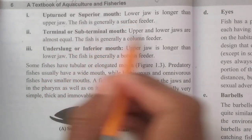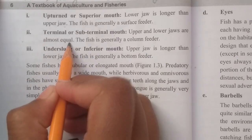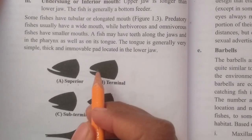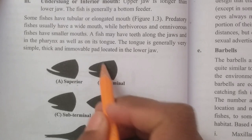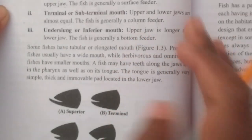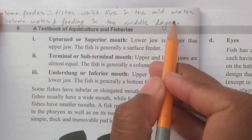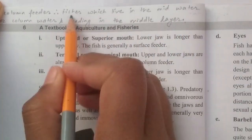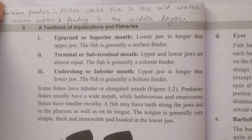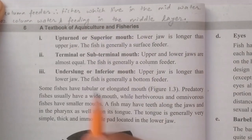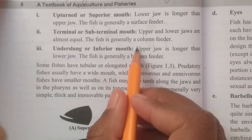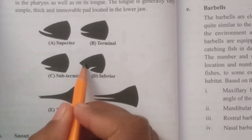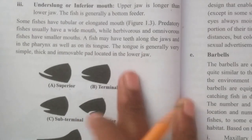Terminal and sub-terminal mouth: upper and lower jaws are almost equal; such fish are generally column feeders — species feeding in the mid-water column. In the inferior or underslung mouth, the upper jaw is longer than the lower jaw; such fish are generally bottom feeders.